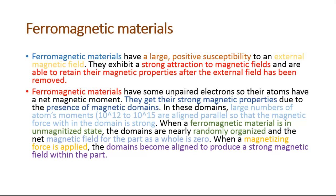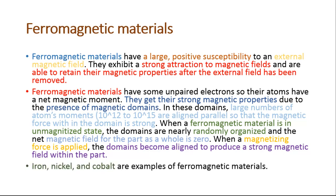Ferromagnetic materials get their strong magnetic properties due to the presence of magnetic domains. In these domains, a large number of atoms' moments are aligned parallel so that the magnetic force within the domain is strong. When a ferromagnetic material is in an unmagnetized state, the domains are nearly randomly organized and the net magnetic field for the part as a whole is zero. When a magnetizing force is applied, the domains become aligned to produce a strong magnetic field within the part. Iron, nickel, and cobalt are examples of ferromagnetic materials.